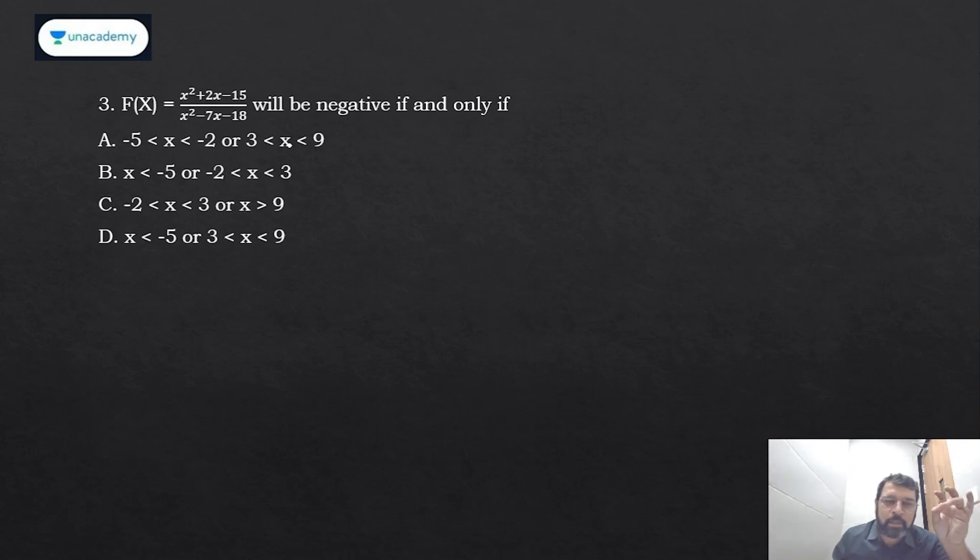If you put x = 0, it will give you -15/-18 which is nothing but positive. So 0 should not be in my answer. Look at the options: in the first option zero is not there. In the second option we have zero in this range, so this is ruled out. In third option also we have zero in this range, this is also ruled out. So my answer is either A or D.